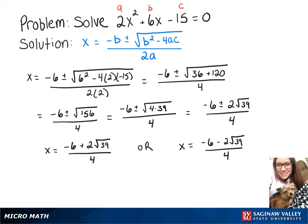And since 2 can fit into each of those numbers, our final answer here will be negative 3 plus root 39 over 2 or negative 3 minus root 39 over 2.